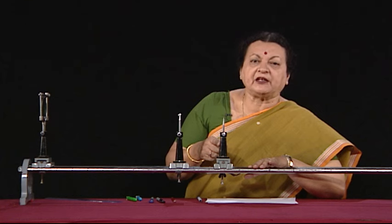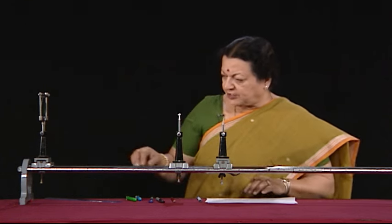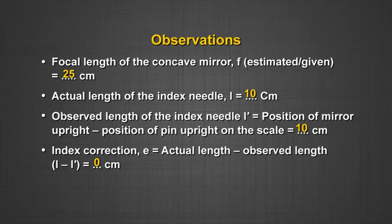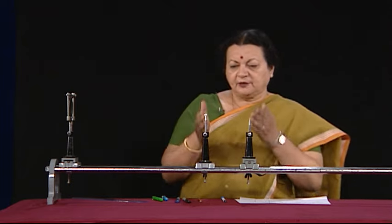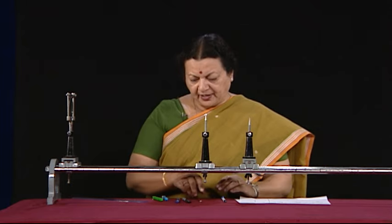First, find the rough focal length by focusing a distant object on a screen. For this particular mirror, that value comes out to be approximately 25 centimeters. Make note of that before proceeding.